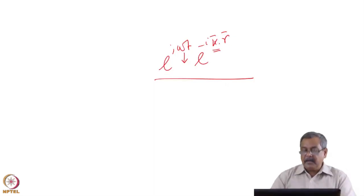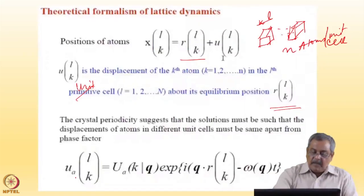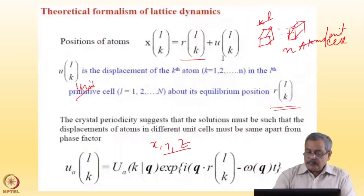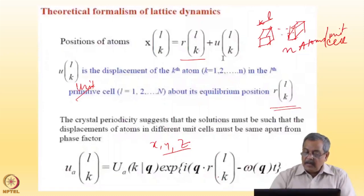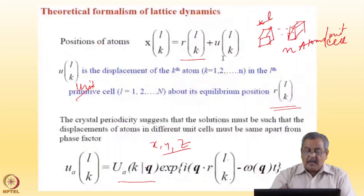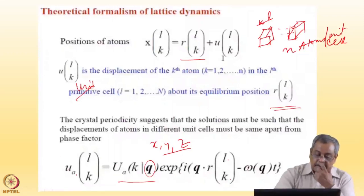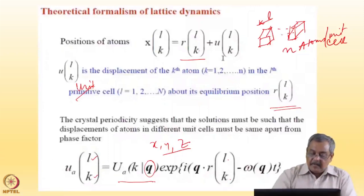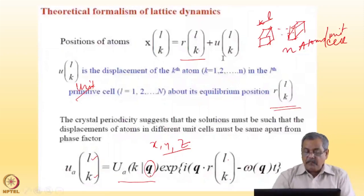The α component — where α is x, y, z — is given by e to the power i·q·r, where r is the equilibrium position of the k-th atom in the l-th cell. U_α(k, q) is the x, y, or z component of the k-th atom's displacement for the phonon of wave vector q. This gives the total displacement u_x, u_y, or u_z for the k-th atom in the l-th cell coming from the phonon of wave vector q.